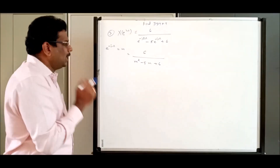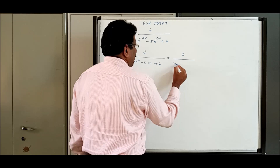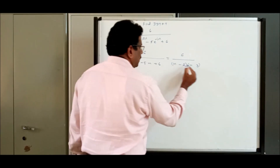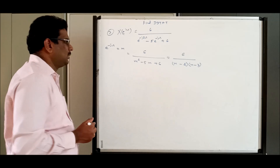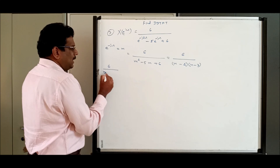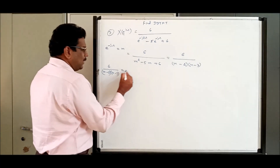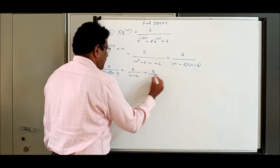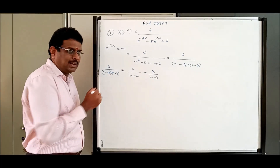We can split the denominator into two factors. 6 divided by (m minus 2)(m minus 3), since minus 2 and minus 3 give minus 5m and plus 6. Now I want to do partial fractions: 6 by (m minus 2)(m minus 3) equals A by (m minus 2) plus B by (m minus 3). Recall what we learnt in z-transform. Let the numerator be a constant, since the general format a^n u(n) has 1 in the numerator.